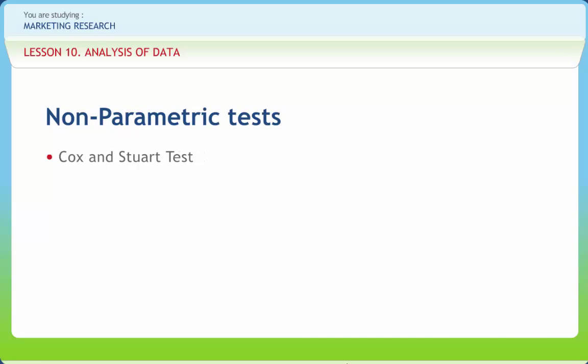Cox and Stewart test is similar to signed test, but takes into consideration the ranking of the magnitude of the difference among the pairs of values. Mann-Whitney-U, similar to Wilcoxon matched paired signed ranks test, except that the samples are independent and not paired. It's the most commonly used alternative to the independent samples t-test. Null hypothesis: the population means are the same for the two groups.